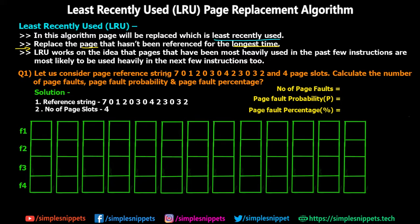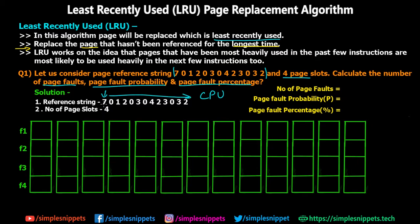Let's read the question. Consider a page reference string: 7, 0, 1, 2, 0, 3, 0, 4, 2, 3, 0, 3, 2, and we have four page slots. We have to calculate the number of page faults, page fault probability, and page fault percentage. This reference string represents the page numbers the CPU wants to execute in order. With four page slots, we only have four frames in main memory, so a replacement algorithm is needed when those frames are full.